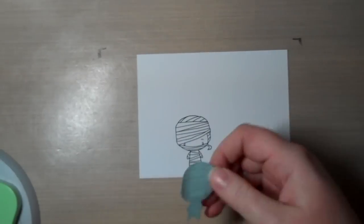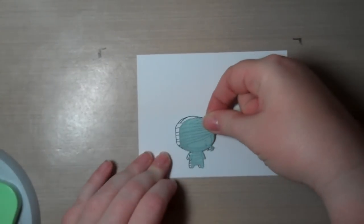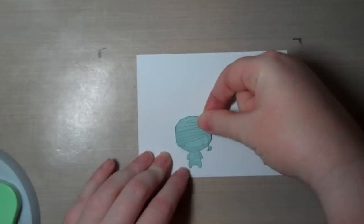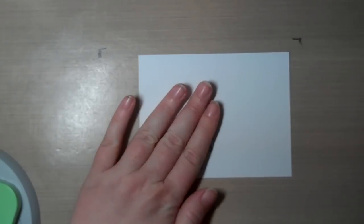So now I've got him stamped onto my cardstock. I'm going to take my mask and I'm just going to lay it right over him, lining it up as best I can.